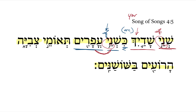Your two breasts are like two fawns — these would be young deer, something like that. And then we get the word for 'twins of,' again with the masculine plural construct ending there: twins of a gazelle, a female deer in this case.